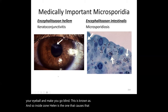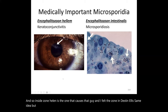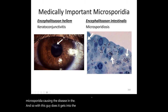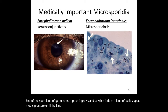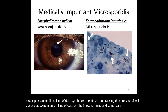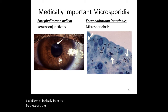Encephalitozoon intestinalis causes microsporidiosis — a disease prominent in the intestines. The spore germinates in the gut, builds up osmotic pressure, destroys the cell membrane, and causes the intestinal lining to break down, resulting in severe diarrhea. Those are the key Microsporidia highlights — organisms with specific medical importance due to parasitic, intestinal, and ocular impacts.